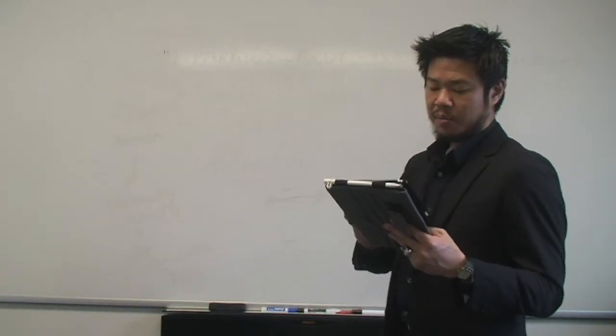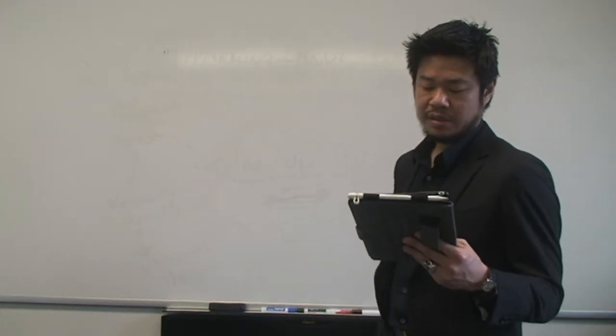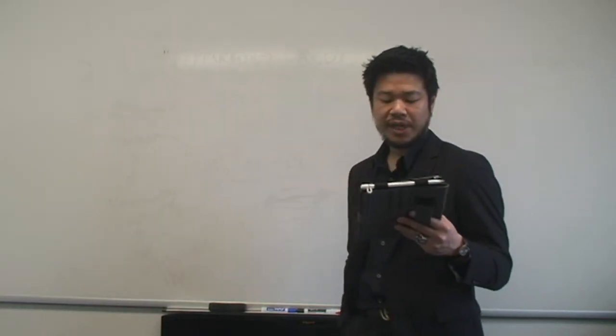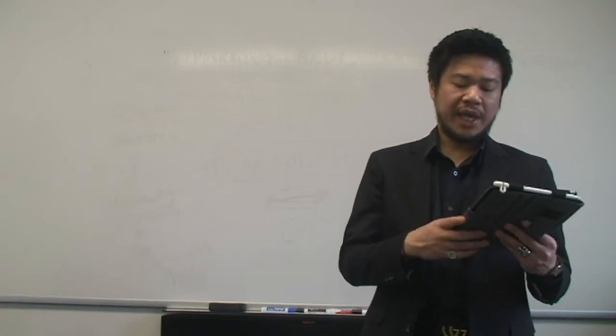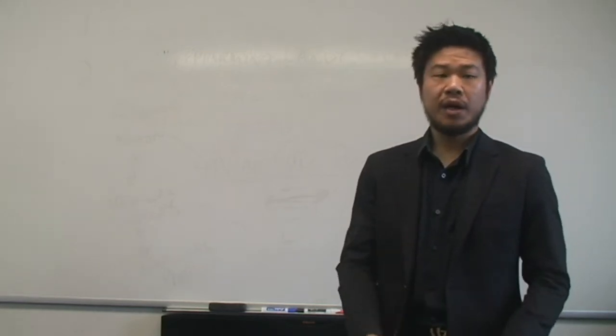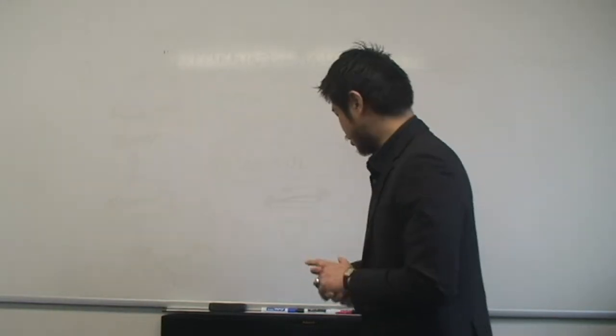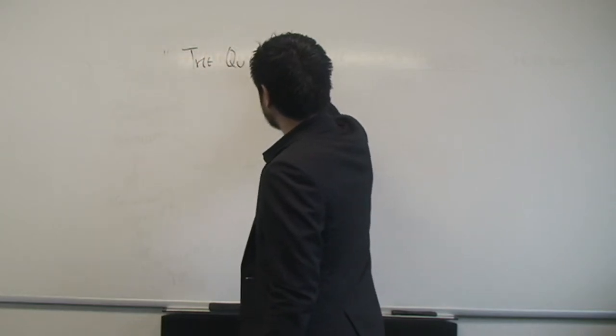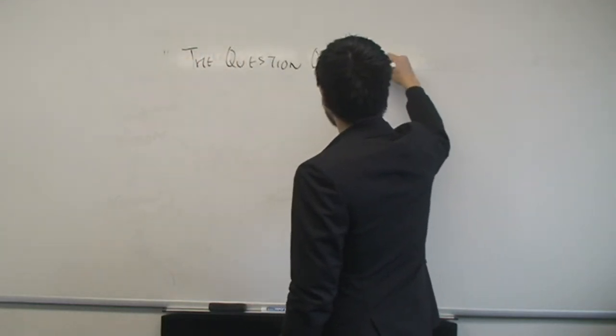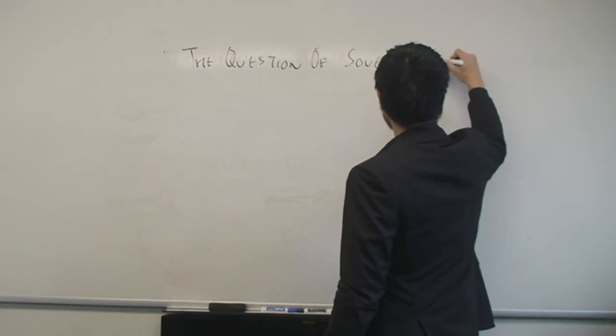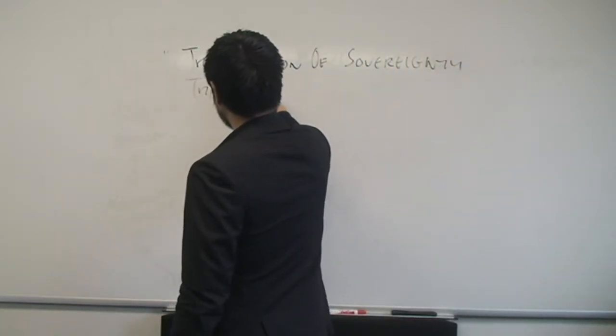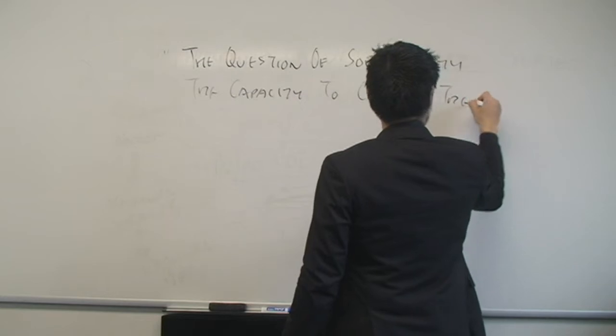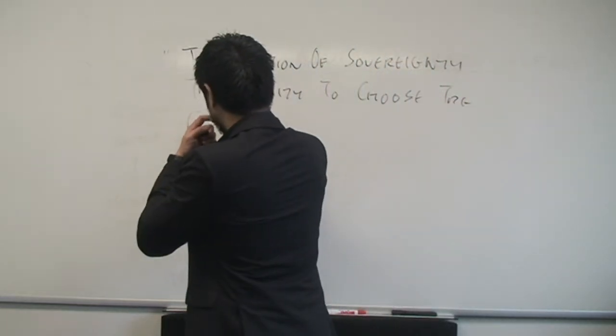So again just to kind of reiterate the problem of sovereignty on page 15. The capacity to decide upon the exception, right. That is sovereignty. And this is where one of the kind of just to put it again up again. Question. The exception of sovereignty. The capacity to choose the exception. Right.